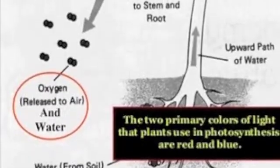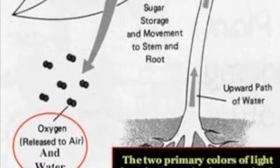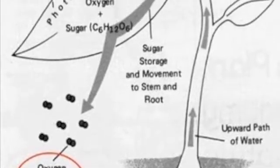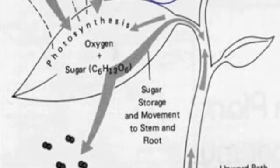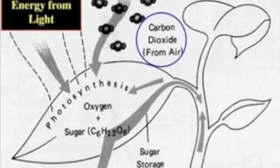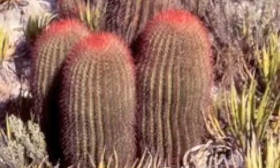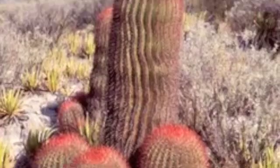All plants go through a photosynthesis process. The leaves of a plant play a very important role in photosynthesis. Most plants use their leaves for this process, but some plants, like cactus plants, photosynthesize through their skin or bark.